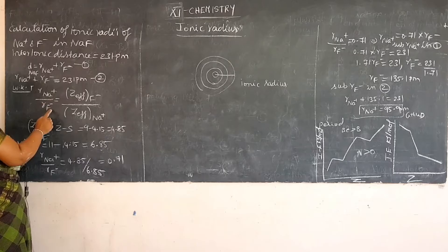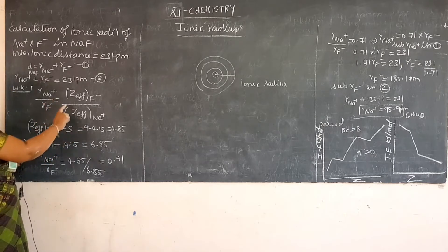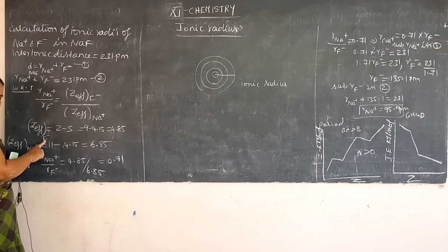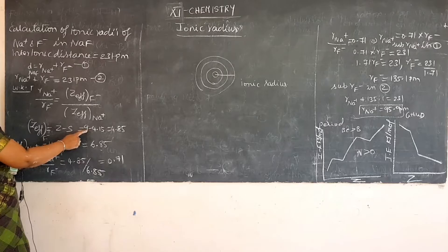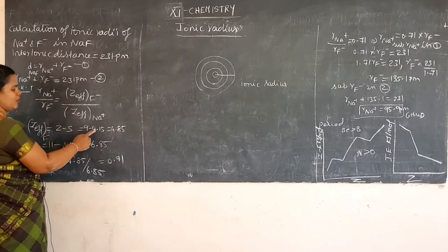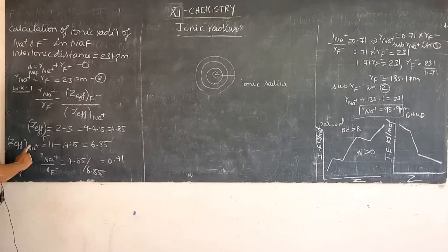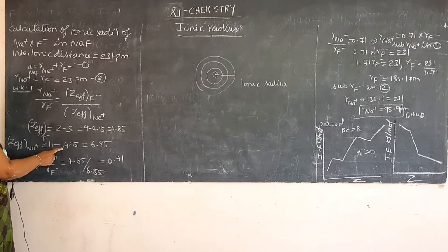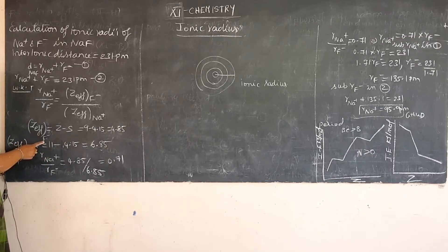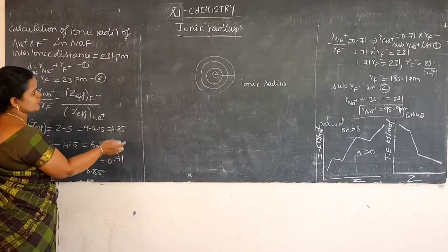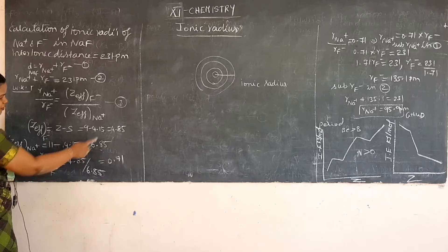We know that r_Na+ divided by r_F- equals Z_effective(F-) divided by Z_effective(Na+). The effective nuclear charge is calculated as Z minus S. For F-, the atomic number of fluorine is 9 and the screening constant is 4.15, so Z_eff(F-) = 9 - 4.15 = 4.85. For Na+, the atomic number of sodium is 11 and the screening constant is 4.15, so Z_eff(Na+) = 11 - 4.15 = 6.85.